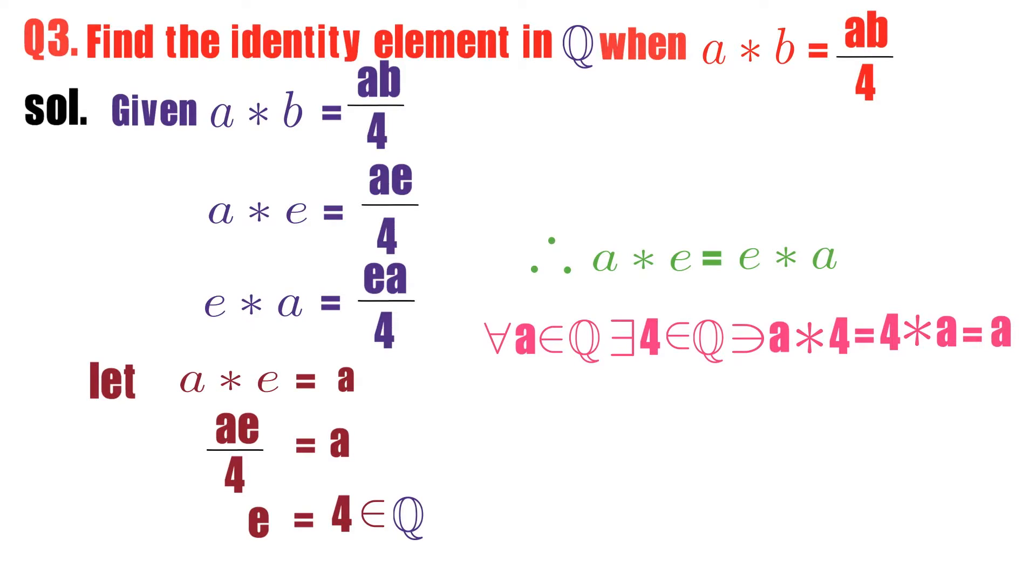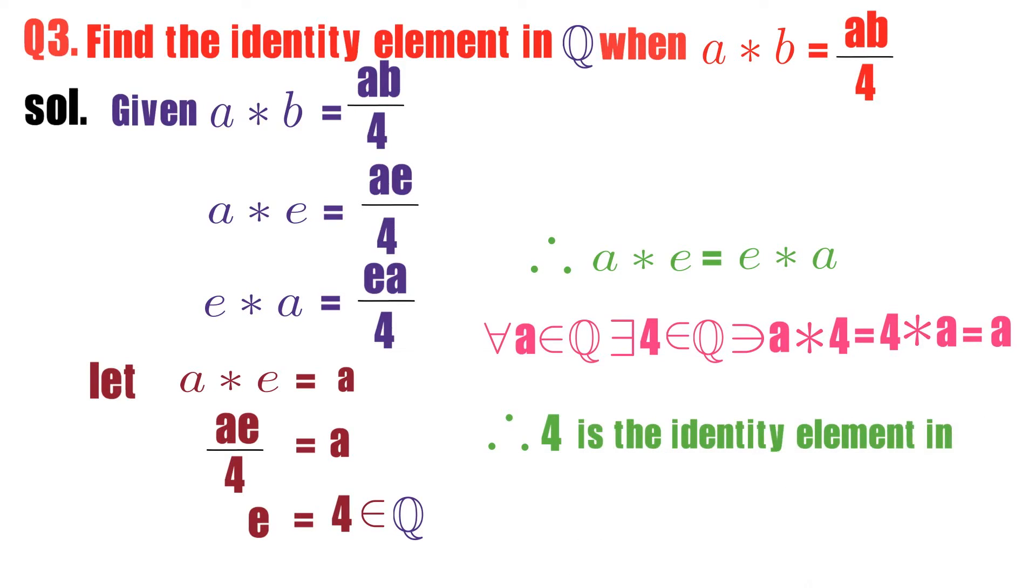Therefore, what you can conclude here? 4 is the element which is a rational number and satisfying identity law. Therefore, 4 is the identity element in Q when a star b equals to ab divided by 4.